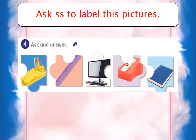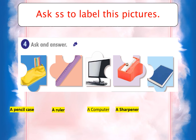I want you to ask a question using 'what is this' or 'what is that.' Picture number one: what is this? It's a pencil case. Picture two: what is that? That is a ruler. Picture three: what is this? This is a computer. Picture four: what is that? What is this? This is a book.